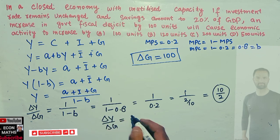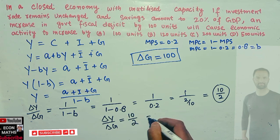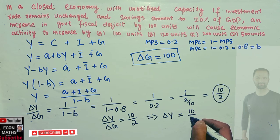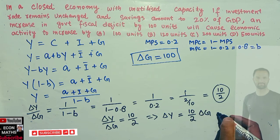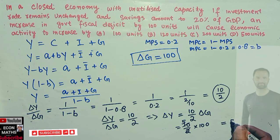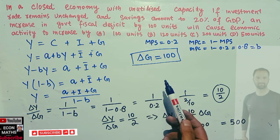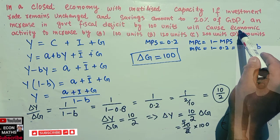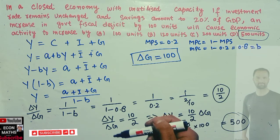So ∂Y/∂G = 10/2, meaning the change in output when government expenditure changes equals 5. The change in economic activity ΔY = (10/2) × ΔG. The change in government expenditure is given as 100 units, so ΔY = (10/2) × 100 = 5 × 100 = 500. Therefore, the change in economic activity when the government fiscal deficit increases by 100 units equals 500. The correct option is 500 units.